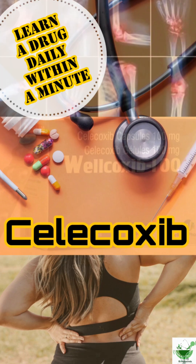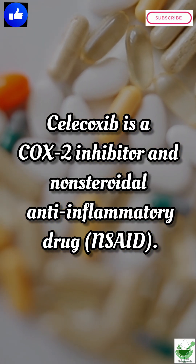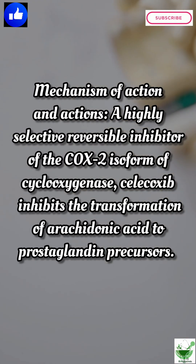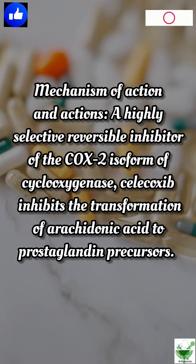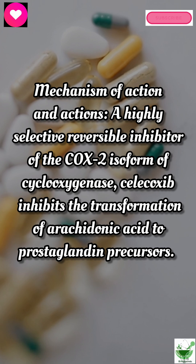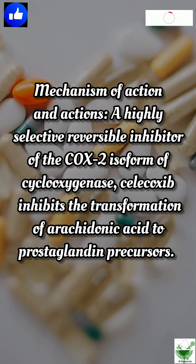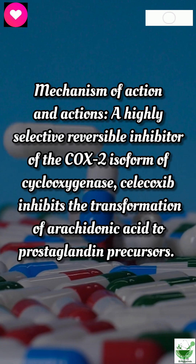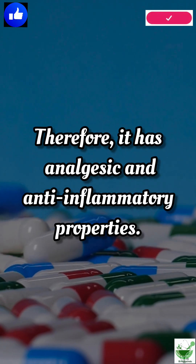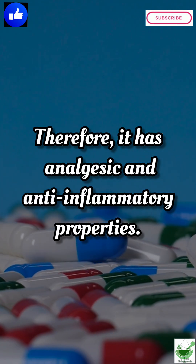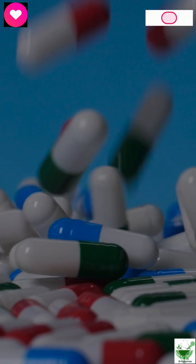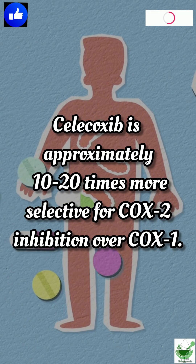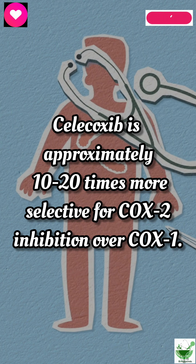Celecoxib is a COX-2 inhibitor and non-steroidal anti-inflammatory drug. Its mechanism of pharmacological action: it is a highly selective, reversible inhibitor of the COX-2 enzyme, which inhibits the transformation of arachidonic acid to prostaglandin precursor. Therefore, it has analgesic and anti-inflammatory properties. It is approximately 10 to 20 times more selective for COX-2 inhibition over the COX-1 enzyme.